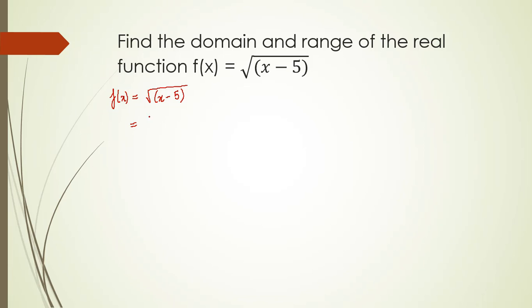Now what will happen if the value of this square root sign turns out to be negative? If I take x to be 3, what will happen? Let's see. f(x) will be 3 minus 5, that will give me f(x) to be negative 2, which is not defined. That means x cannot take any value which is less than 5.